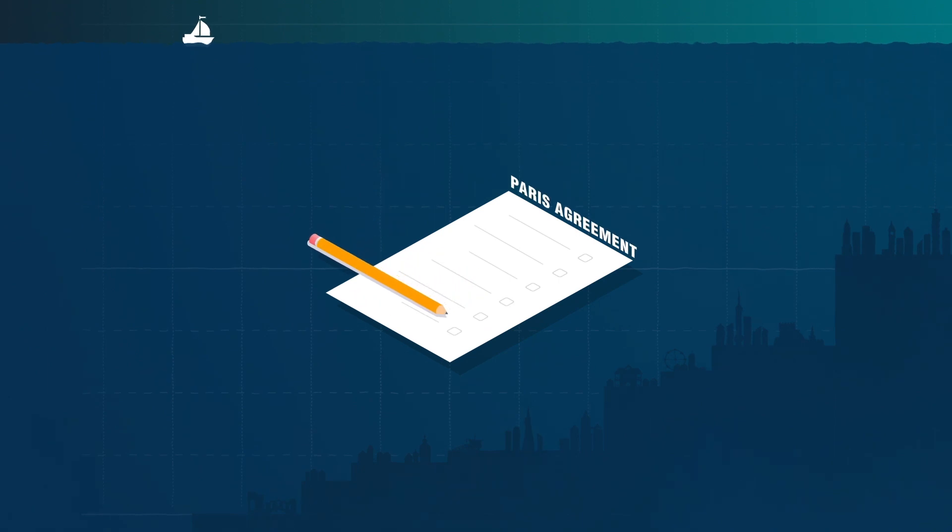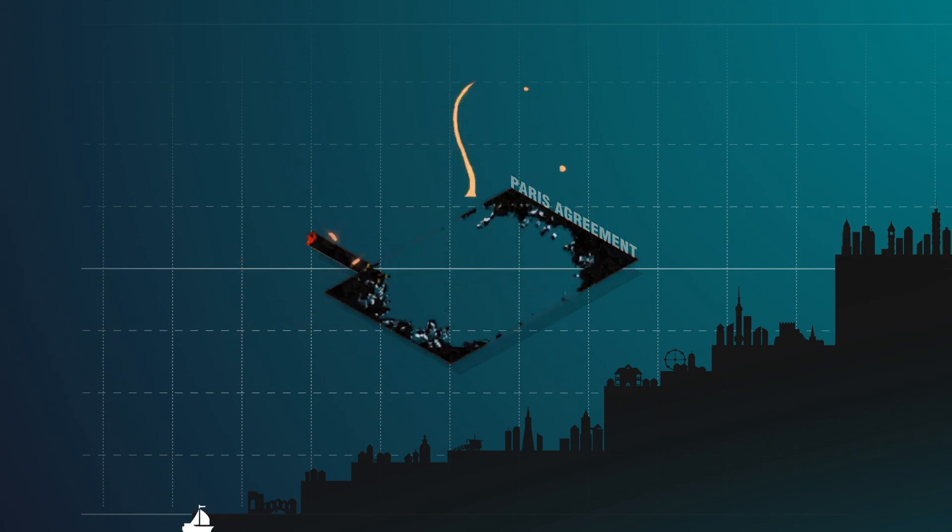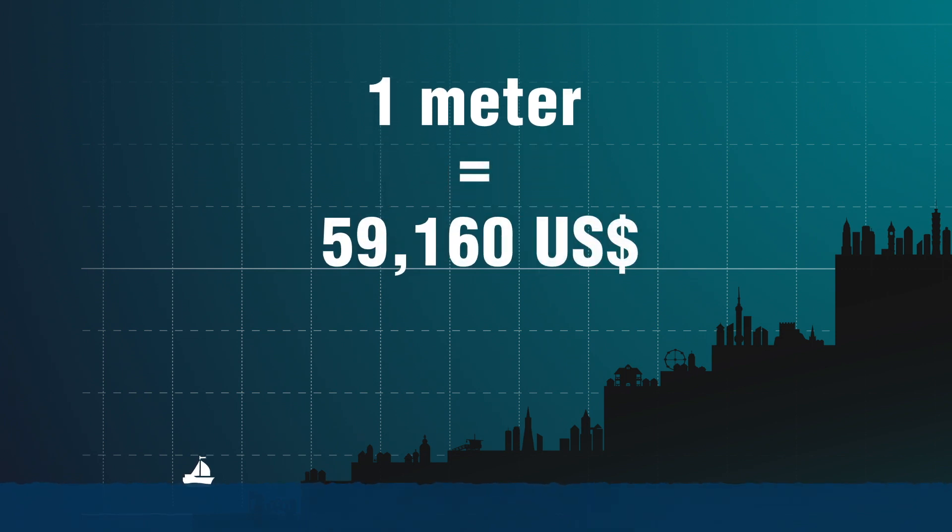Currently, if we do not follow the Paris Agreement and don't reduce our greenhouse gas emissions, sea level rise could exceed one metre during the second part of the century. It may sound like nothing, but it's not.